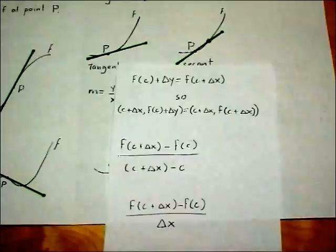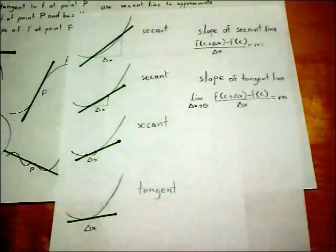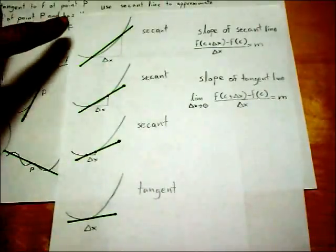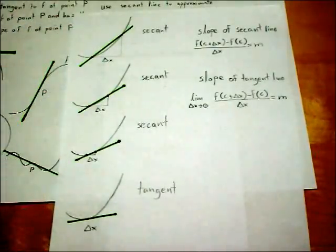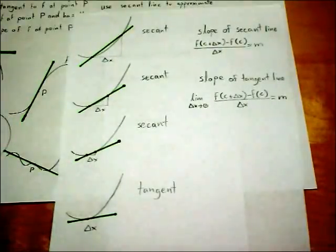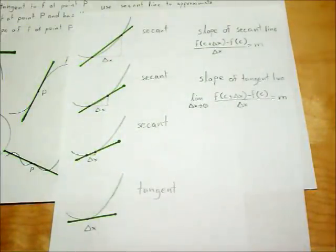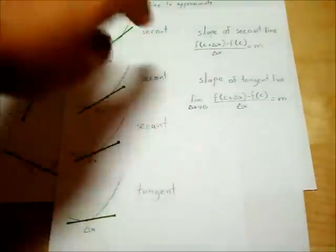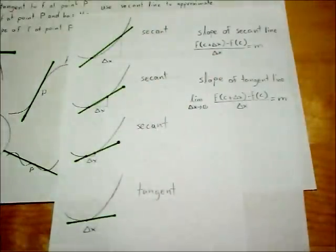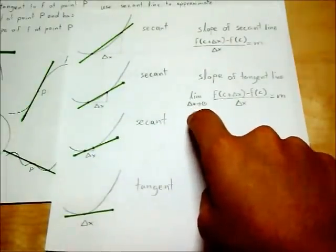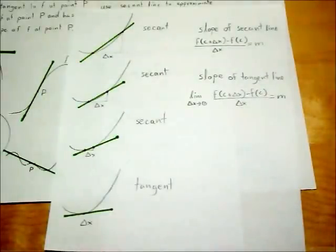We substitute the points' coordinates into the slope formula and simplify. Now we have the secant line's slope. But if we reduce the distance between the secant line's points on function f, the secant line approximates the tangent line more and more. In fact, if we reduce the distance to zero — reducing delta x to zero — the secant line becomes the tangent line. However, if we try using the slope formula with a delta x of zero, we get a zero in the denominator. So we change the formula into the limit of the secant line's slope formula as delta x approaches zero. And voilà, we have a slope formula for the tangent line.